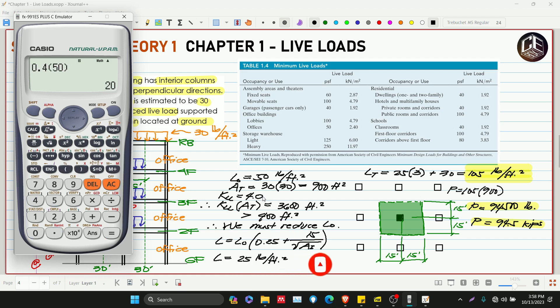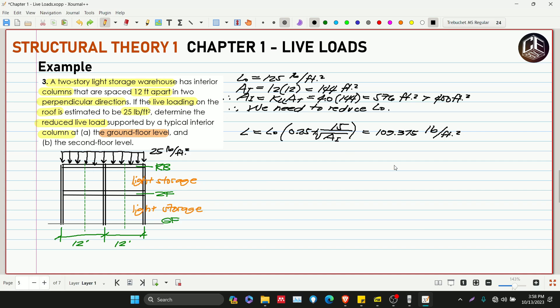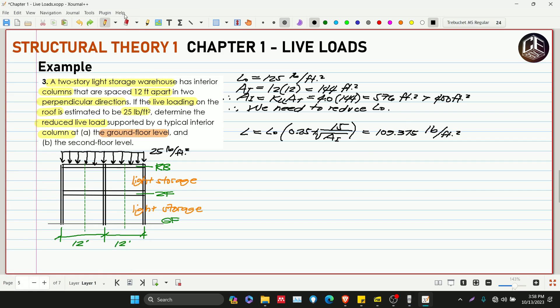Since ang ating reduced live load dito is 109.375 and 0.4 of 125 is 50, greater than tayo sa 50 pounds per feet squared, so pasok na tayo sa ating reduced live load. Okay na ito.